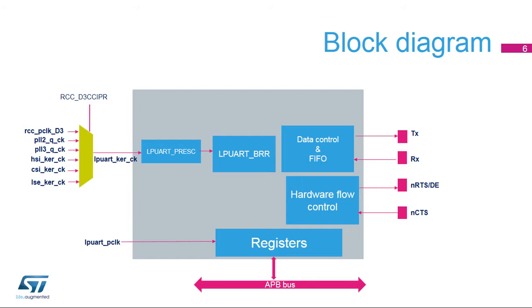TX and RX pins are used for data transmission and reception. Pins NCTS and NRTS are used for RS-232 hardware flow control. The driver-enable, or DE signal, which is available on the same I/O as NRTS, is used in RS-485 mode.